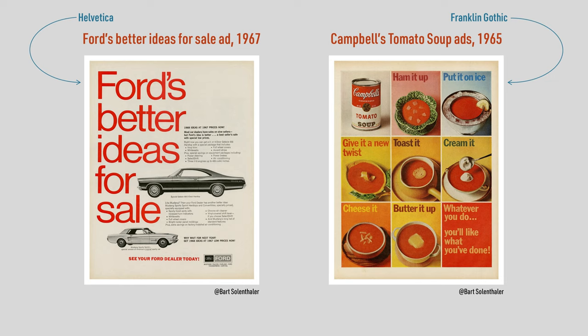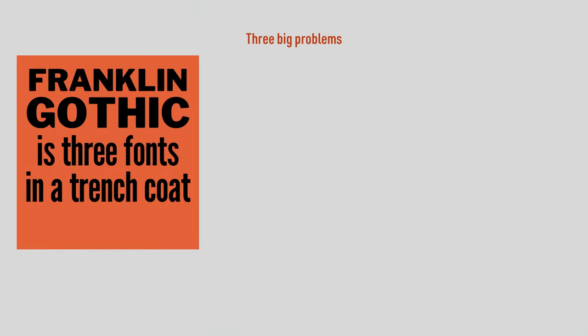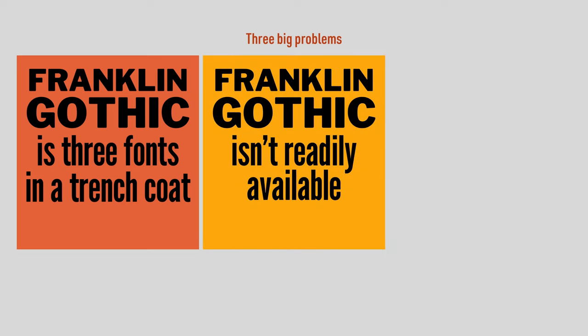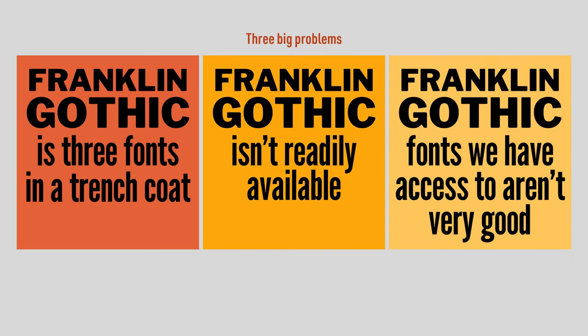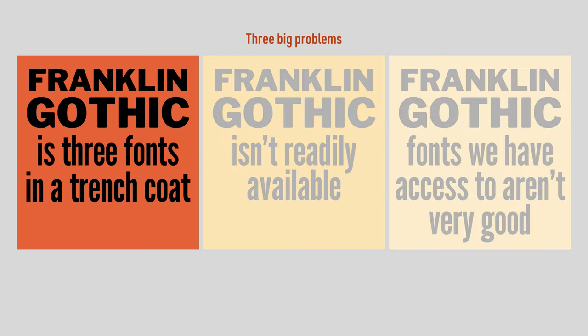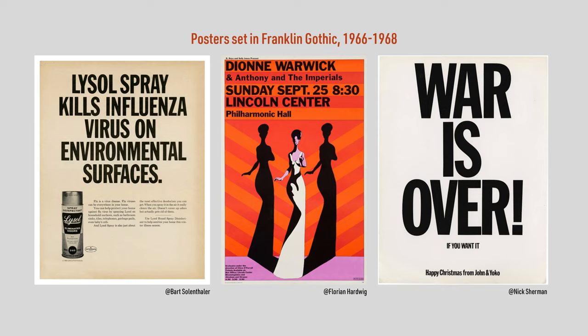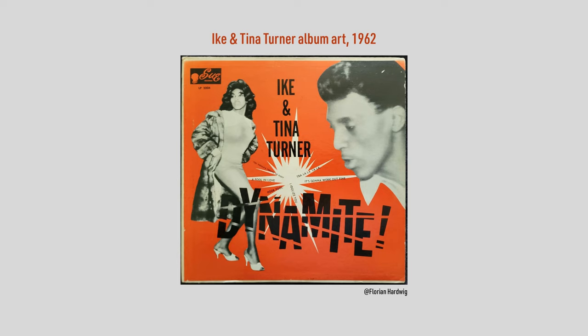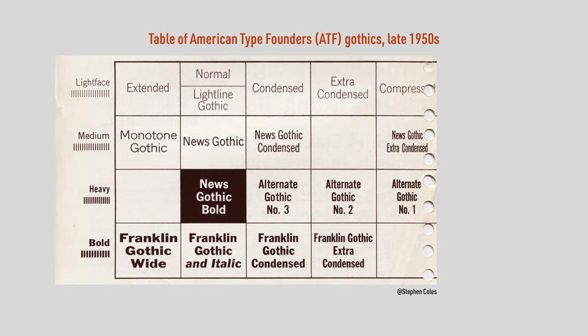Assuming you're on board with this plan, let me first give you the bad news before we move on to the good news. When most of us want to use Franklin Gothic, we run into three big problems. Franklin Gothic is three fonts in a trench coat, Franklin Gothic isn't readily available, and the Franklin Gothic fonts most of us have access to aren't very good. The Franklin Gothic we know and love from posters, flyers, newspapers, and album covers is actually just a single heavyweight font with three different widths. Lighter weight versions of Franklin Gothic are actually entirely separate fonts, though they do have the same basic design.